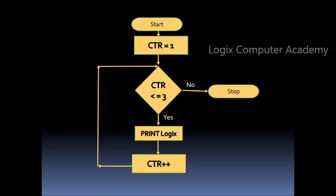Now the counter is 2, so it prints Logix again and increments the counter by 1. This time the counter is 3, so it meets the condition which says counter should be less than or equal to 3. Again it prints Logix and the counter increments by 1. Now it does not meet this condition, so it exits the loop and the program stops.